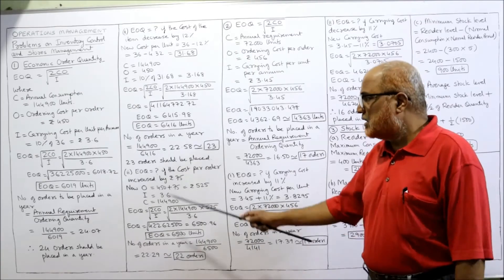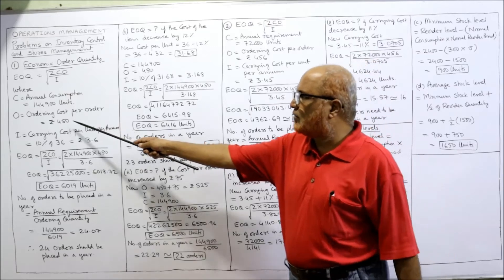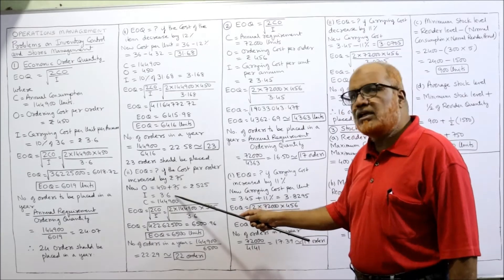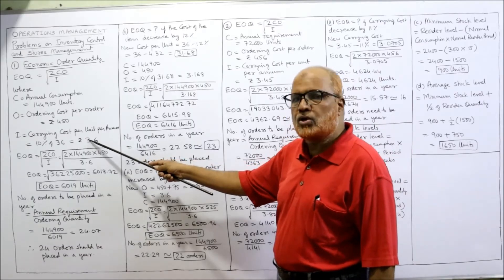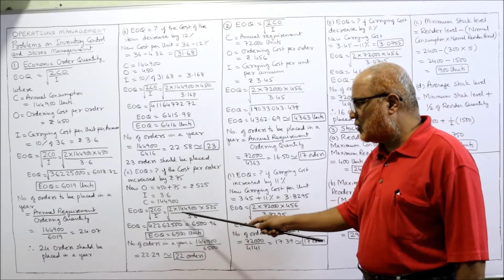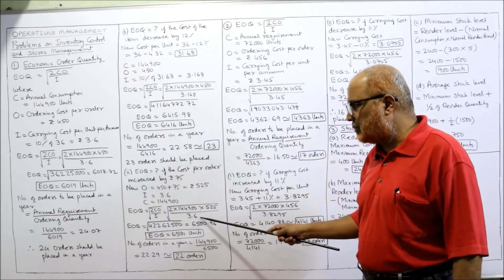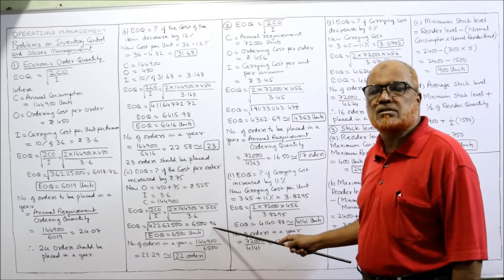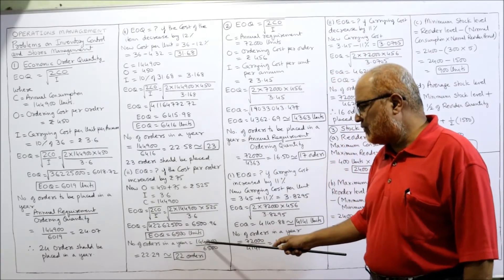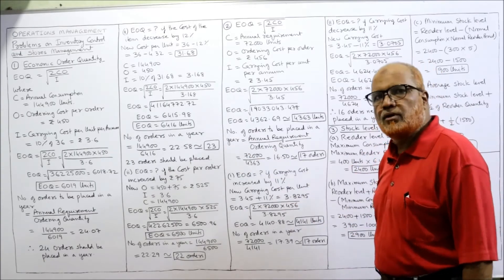Third part: EOQ if the cost per order increases by Rs. 75. Earlier the ordering cost was Rs. 450; adding 75 gives a new ordering cost of Rs. 525. I remains 3.6 and C remains 144,900. Substituting: √(2 × 144,900 × 525 / 3.6) = 6500.96, rounded off to 6500 units. Number of orders = 144,900 ÷ 6500 = 22 orders per year.